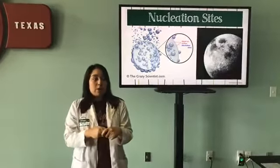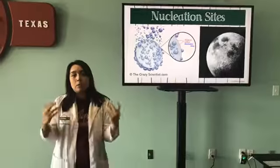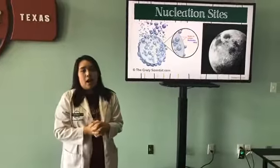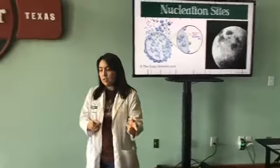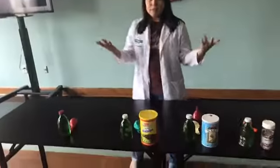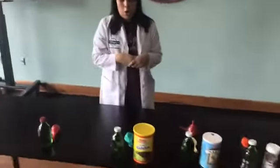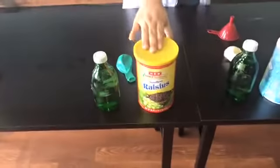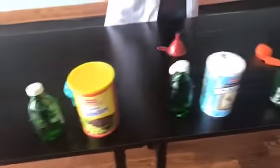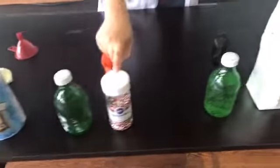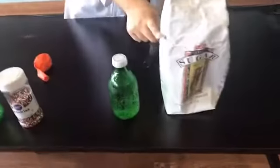Pretty much everything on this earth has nucleation sites, not just Mentos — our skin, our fingertips, rocks, candy, lots and lots of things. So we're going to put this to the test. We've gathered a couple of items, some of which you might be able to find in your own home. We're going to test some raisins, some salt, some sprinkles, and some sugar.